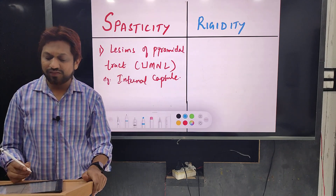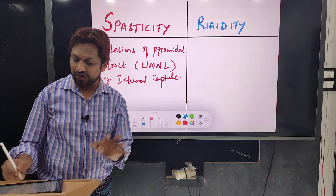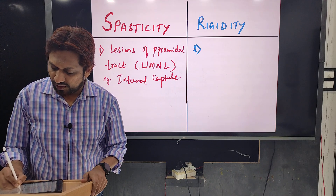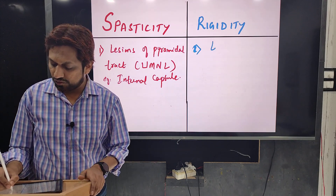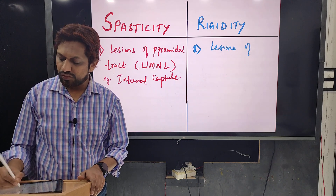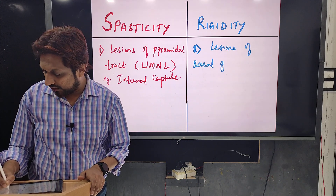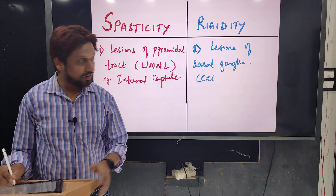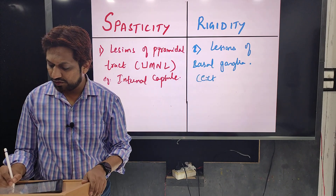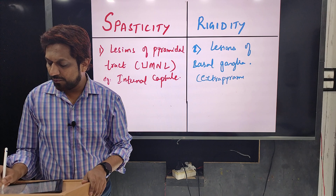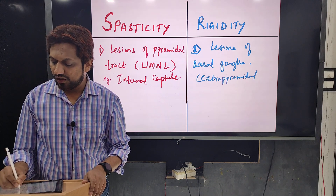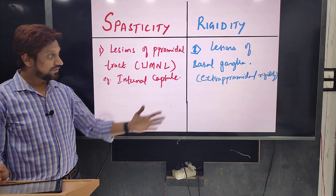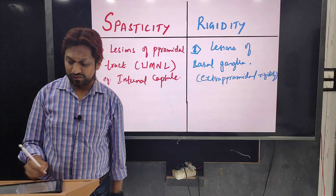Rigidity is usually seen in conditions like Parkinson's disease, due to lesions of extrapyramidal structures like the basal ganglia. Lesions of the basal ganglia cause rigidity, therefore it is also known as extrapyramidal rigidity. So spasticity is pyramidal rigidity, whereas this is extrapyramidal rigidity — due to lesions of the basal ganglia, most commonly in Parkinson's disease.